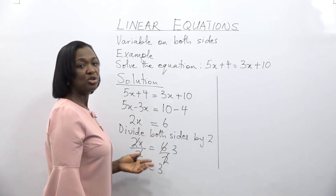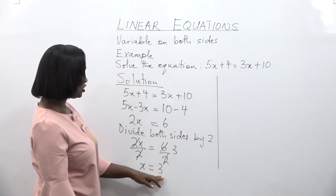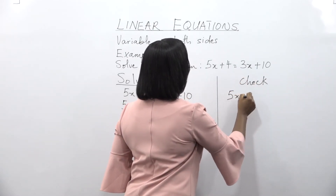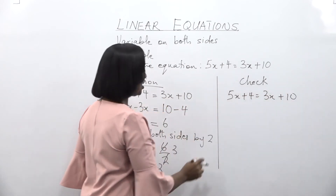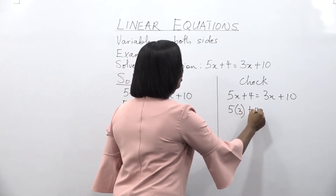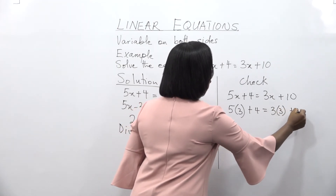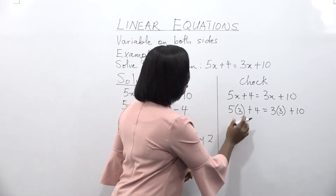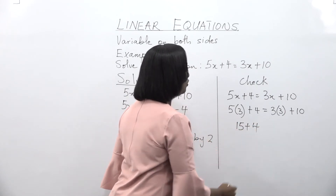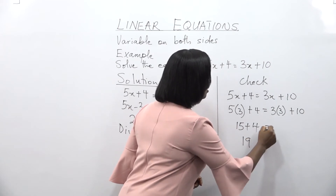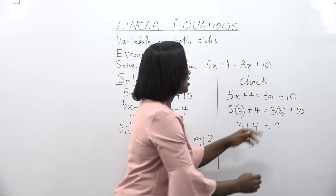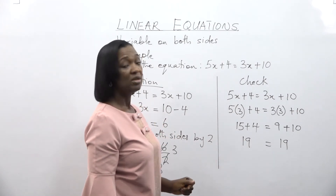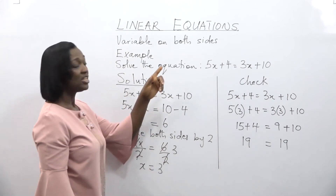Check your answer — make it a habit to always check your answer. We are going to put this value of x, which is 3, into the original equation: 5x plus 4 is equal to 3x plus 10. So 5 times 3 plus 4 is equal to 3 times 3 plus 10. 5 times 3 is 15, and 15 plus 4 is equal to 19. 3 times 3 is 9, and 9 plus 10 is also equal to 19. Both sides of the equation are equal, so the value of x is 3.